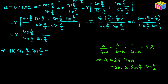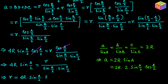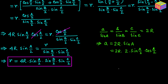Substituting, we get 4R·sin(A/2)·cos(A/2) = r·cos(A/2) / [sin(B/2)·sin(C/2)]. Dividing both sides by cos(A/2), we obtain 4R·sin(A/2) = r / [sin(B/2)·sin(C/2)], which gives us r = 4R·sin(A/2)·sin(B/2)·sin(C/2). This is the important relationship: the inradius equals 4 times the circumradius times sin(A/2) times sin(B/2) times sin(C/2).